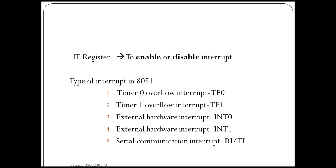What are the types of interrupts? There are two types: Hardware Interrupts and Software Interrupts. Examples include Timer 0 Overflow Interrupt, Timer 1 Overflow Interrupt, External Hardware Interrupt, and Serial Communication Interrupt.